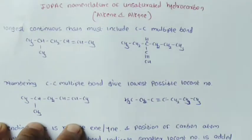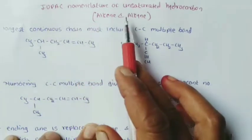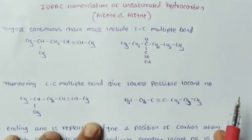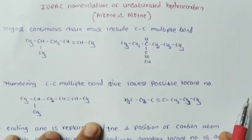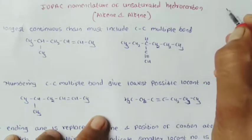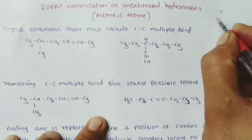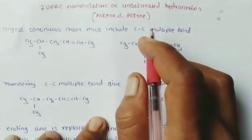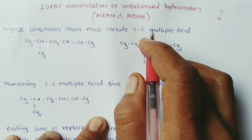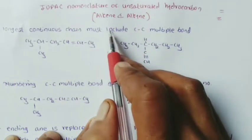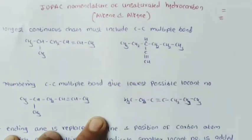Hello students, today we are going to study about IUPAC nomenclature of unsaturated hydrocarbons. Unsaturated hydrocarbons are organic compounds containing either a carbon-carbon double bond or a carbon-carbon triple bond. Compounds with a carbon-carbon double bond are called alkenes, and compounds with a carbon-carbon triple bond are called alkynes.